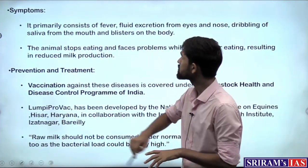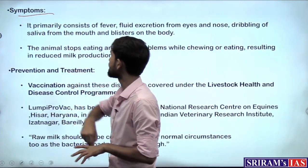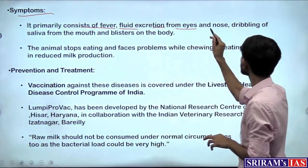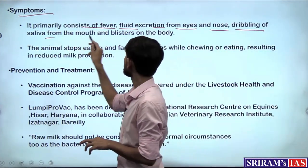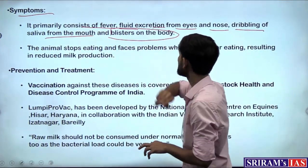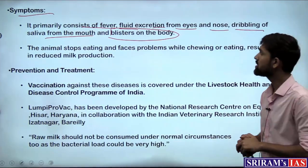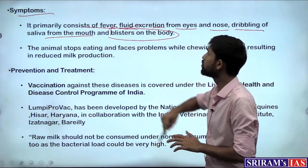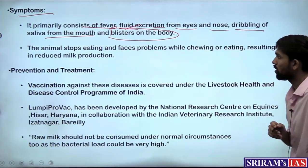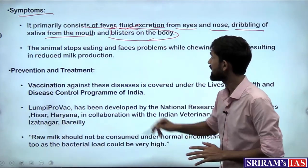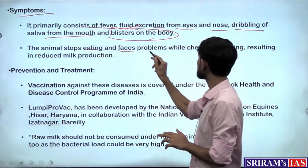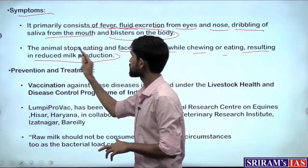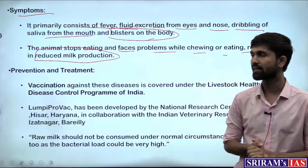What are the symptoms? The major problems cattle face primarily consist of fever, fluid excretion from eyes and nose, dribbling of saliva from the mouth, and blisters on the body — as seen in the photo. The animal stops eating and faces problems while chewing or eating, resulting in reduced milk production, which becomes part of the economic damage the cattle rearer faces.